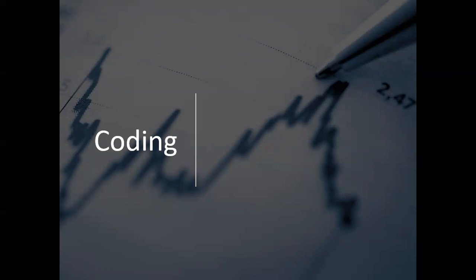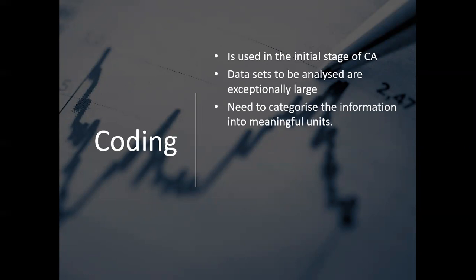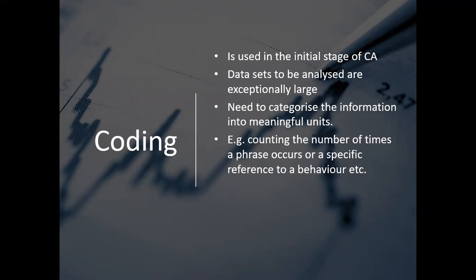Now the first thing we do to help condense it down is a process called coding. Coding is all about taking these large data sets and we start to analyze them and it's about categorizing them into meaningful units. So that means we're looking for things that are reoccurring. It could be a phrase of words, it could be a reference to something. So it allows us to start coding the information.